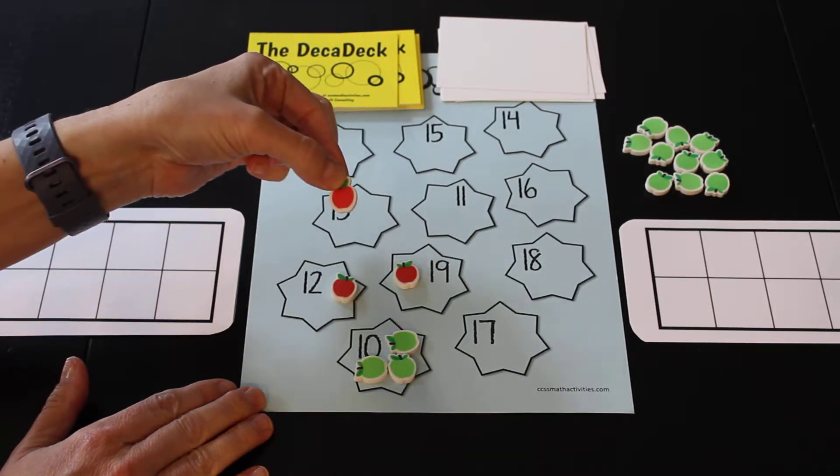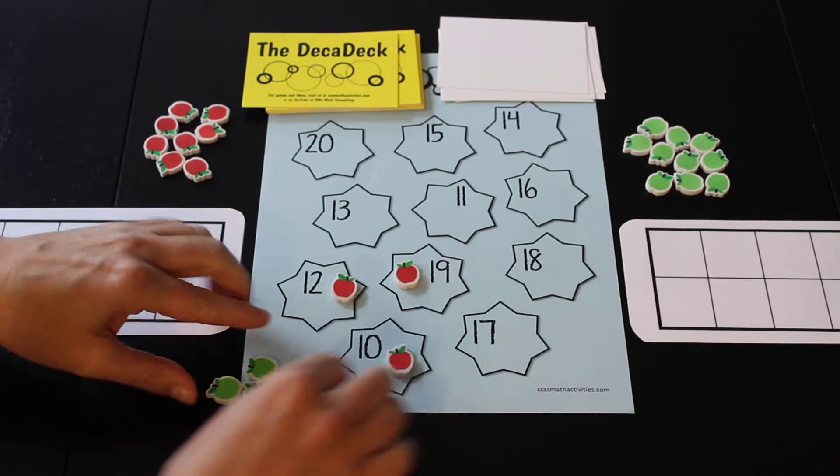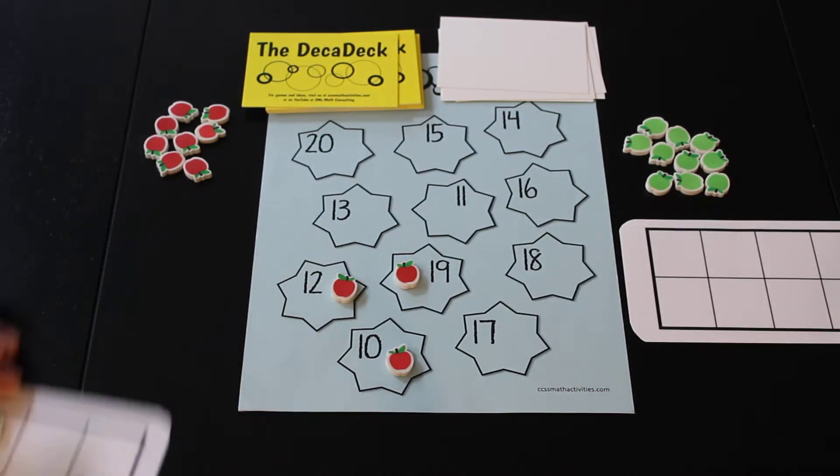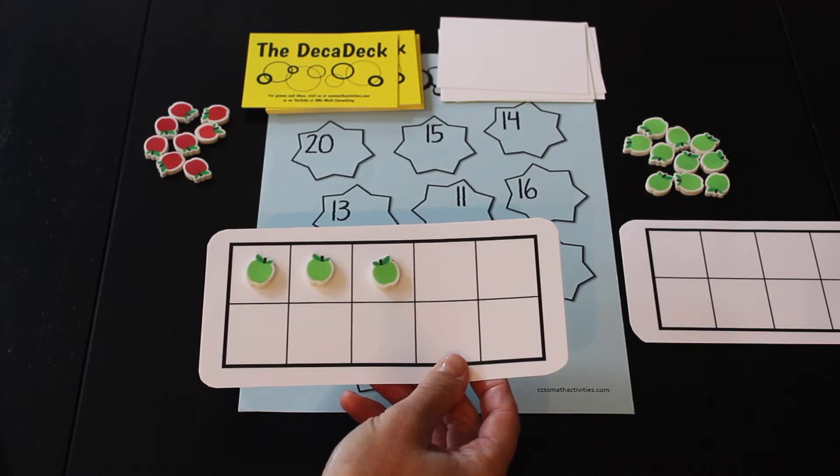So that means that my red apple bumps all three of your green apples off the 10, and I get to put them right here in my 10 frame, which shows that I now have three points. Oh, you are really far ahead!